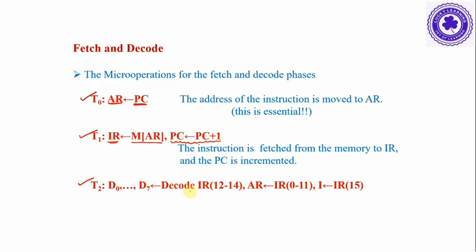Decoding is done based on the opcode. Opcode bits 12 to 14 of the instruction register are decoded to generate decoded output signals D0 to D7. Bits 0 to 11 of the instruction specify the address that will be transferred to the address register, and bit 15 is the mode bit that will be stored into the I flip-flop. Fetching uses timing signals T0 and T1; decoding uses timing signal T2.